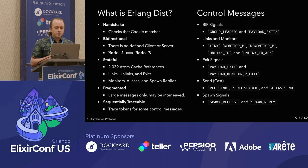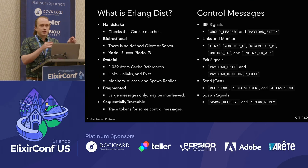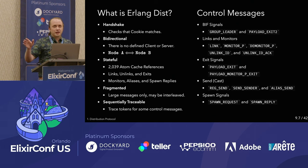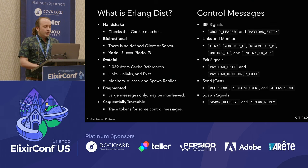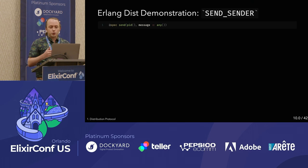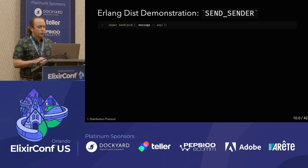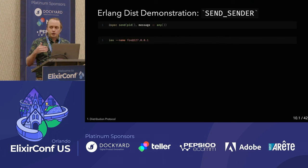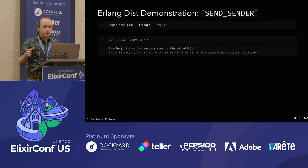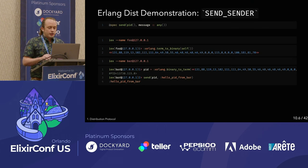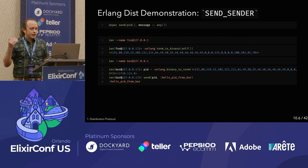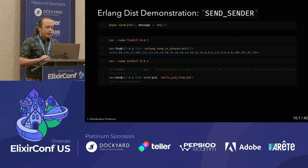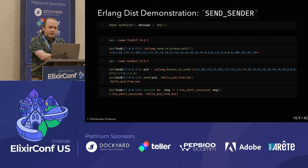A quick demonstration of what code results in a send_sender over the wire: if I start a node called foo at localhost and do term_to_binary on self, I get back a binary. Then on a node called bar at localhost, I do binary_to_term on that blob and get a PID. I can send 'hello' to that PID from bar, and back on the foo node I receive that atom. Behind the scenes, send_sender happened — the connection was established automatically.